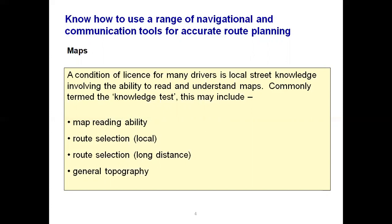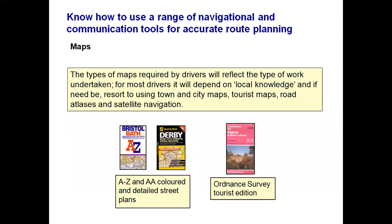Having good knowledge of roads, streets and surrounding areas is essential. The types of maps required reflect the type of work undertaken. For most drivers it depends on local knowledge, and if needed they resort to town and city maps — known as A to Zs. Other map types include tourist maps, road atlases, and satellite navigation.